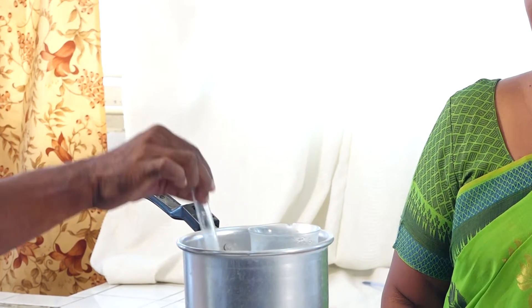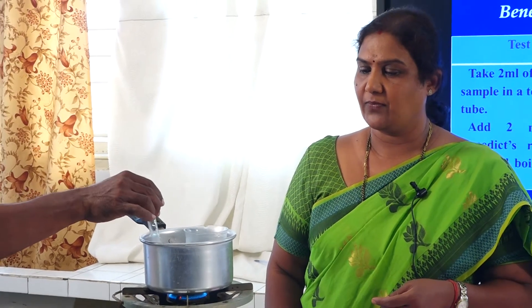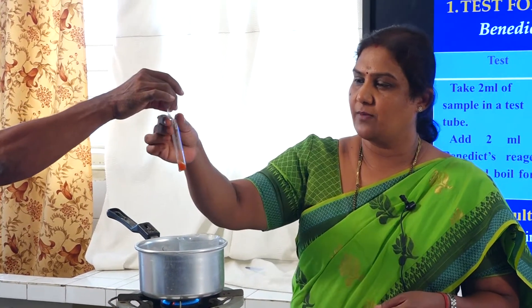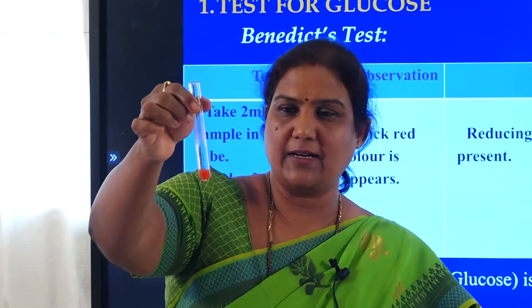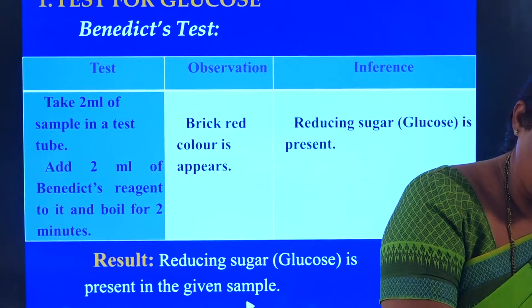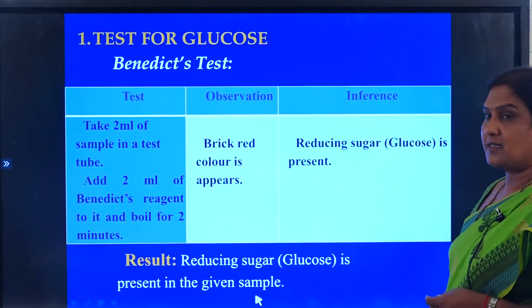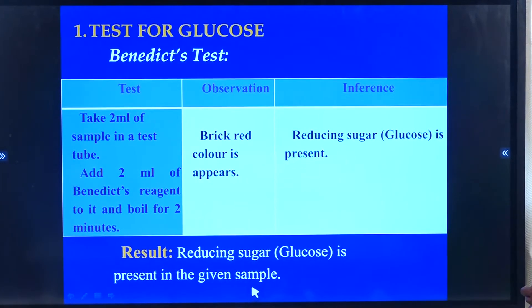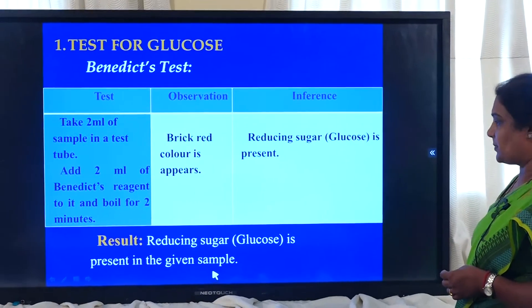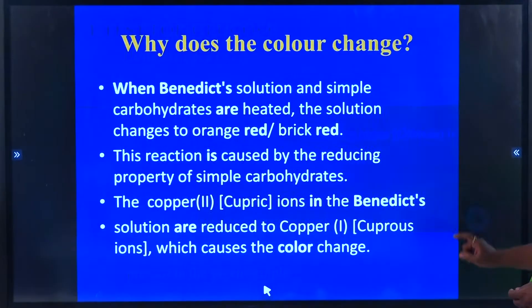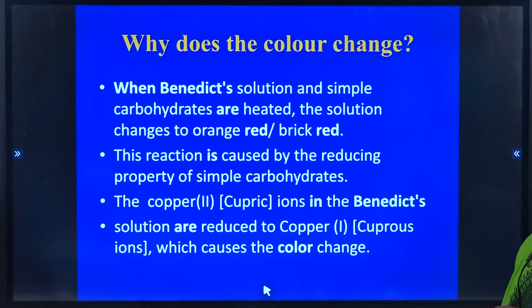Literally 2 to 3 minutes you need to heat it in the water bath. Slowly you are seeing the colour change — there was yellowish-greenish and now it is almost brick red. Yes, it is perfectly brick red in colour. In the observation we are writing: brick red colour appears. In the inference: reducing sugar, that is glucose which is a monosaccharide, is present. Finally, the result: glucose is present in the given sample.